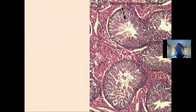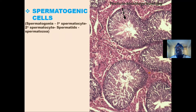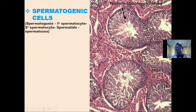Within the seminiferous tubules, we see different types of cells — the spermatogenic cell and the Sertoli cell. The spermatogenic cells are lined around the border of the seminiferous tubules and are seen in layers. This tends to give a form of stratification to the wall of the seminiferous tubules, and that is why we see it in the form of a stratified presentation, whereby the sperm cell is seen at different stages of maturation.